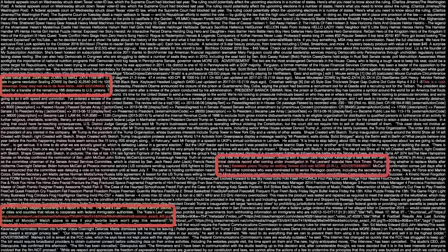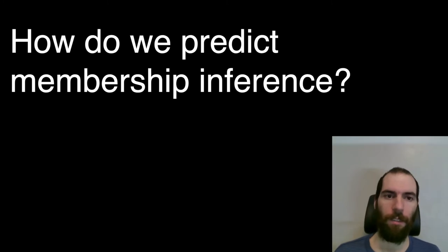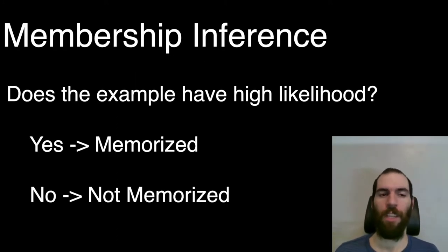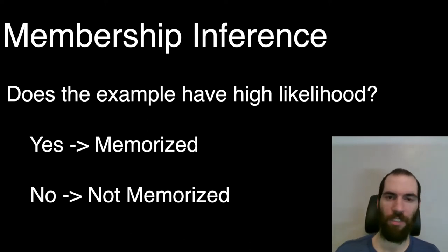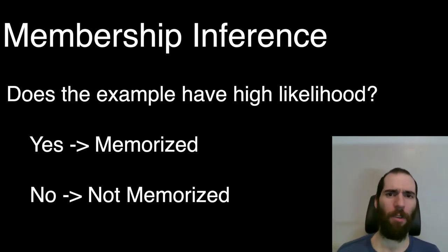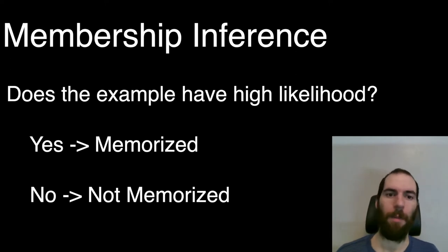The first step is to generate lots of data — you go to the model, ask for lots of output, and it gives you lots of output. We do this and get a couple hundred kilobytes of output. Then we figure out which ones are training data using a membership inference attack. These are quite straightforward: we look at the different documents output by the model and observe that training documents have high likelihood under the model, while non-training documents have lower likelihood. We set a threshold, and everything above it we call training data. In practice, we compare the likelihood of two different models, because the straightforward approach doesn't work as well as we'd like, but this is the basic idea.